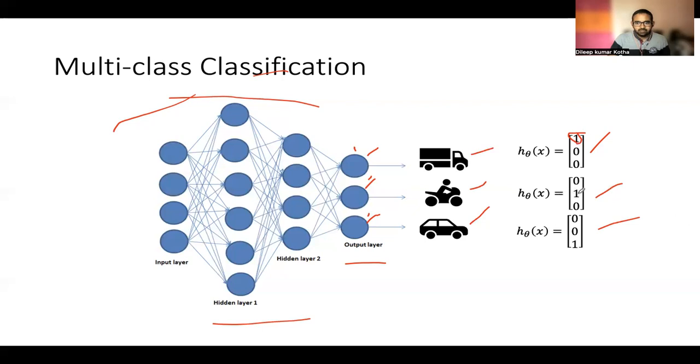If the second hypothesis has more weight, then it is like a bike. The third hypothesis has more weight than it is a car. Here we have shown hypothesis to be a three node vector.